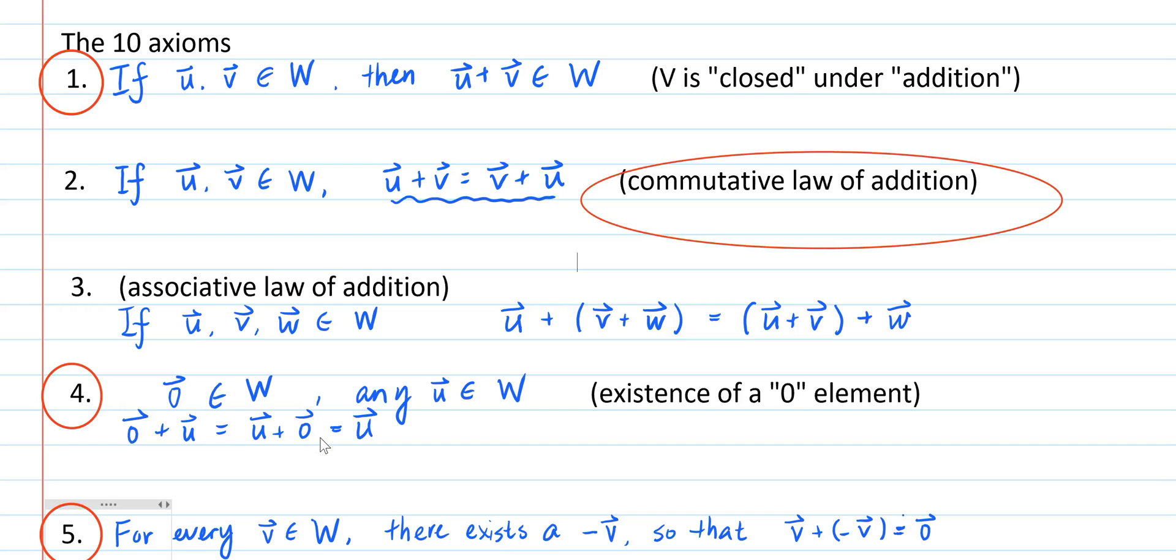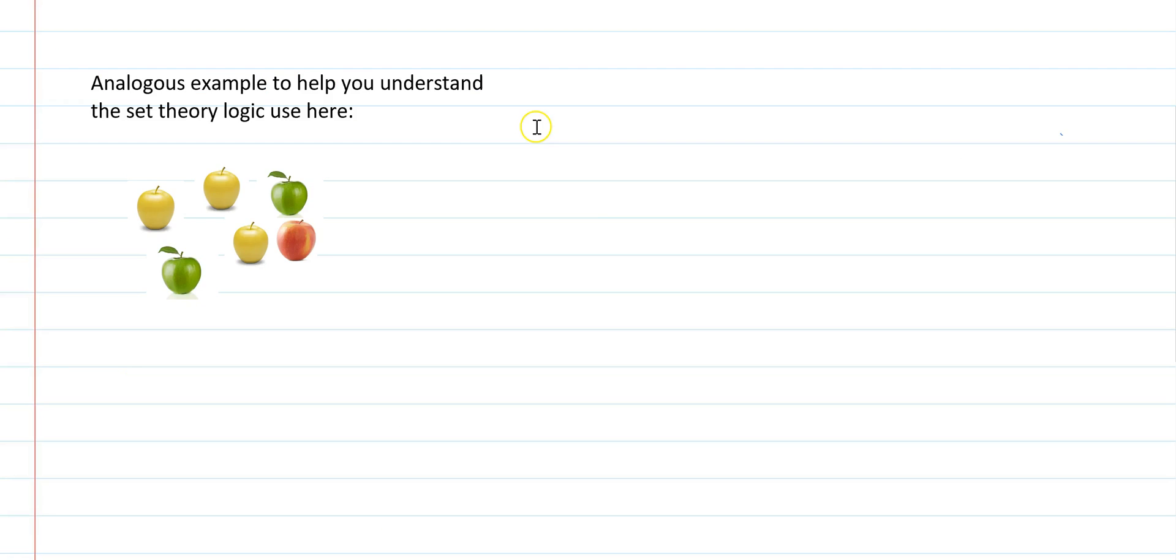For example, if you have commutative law of addition for any two elements in V, then you're going to have commutative law of addition for any two elements in W, because any element in W is automatically an element in V. That's because W is a subset of V.